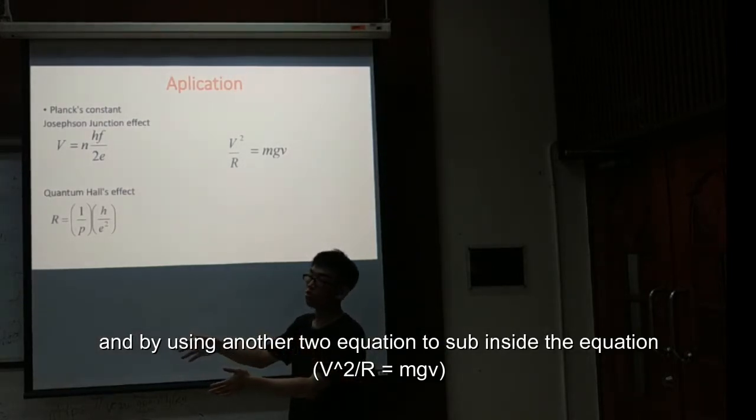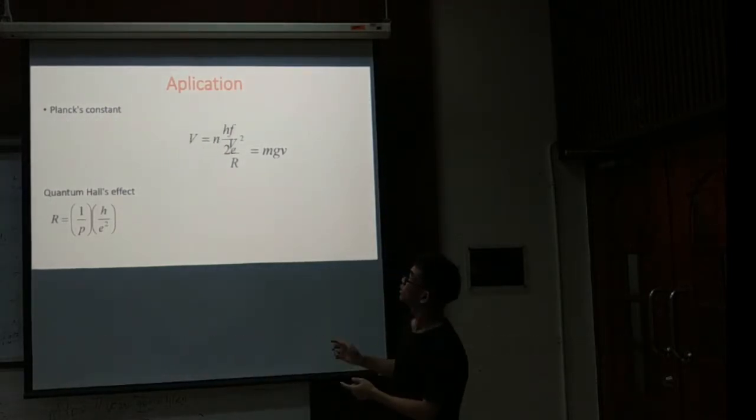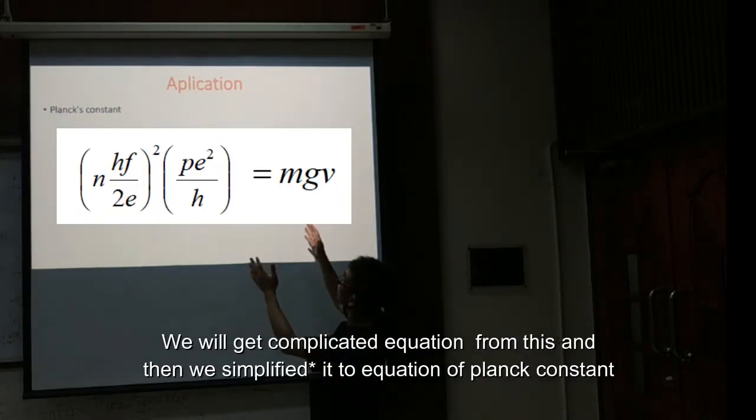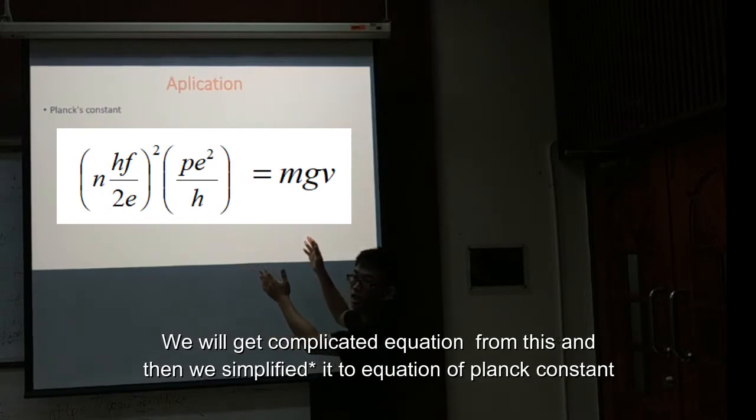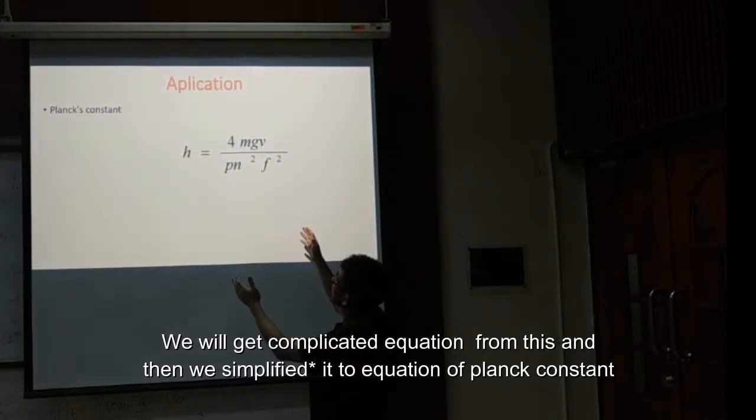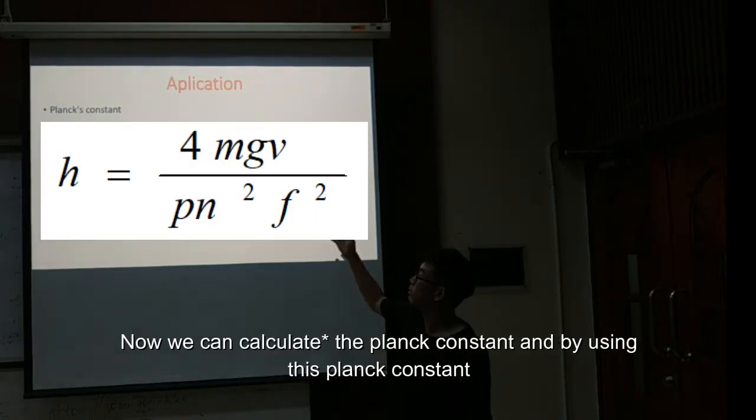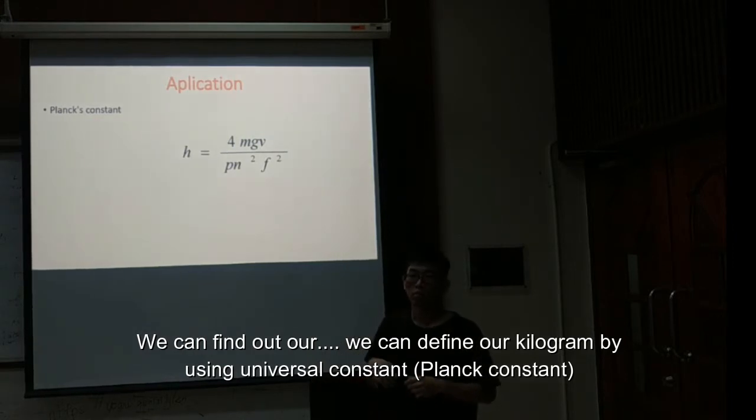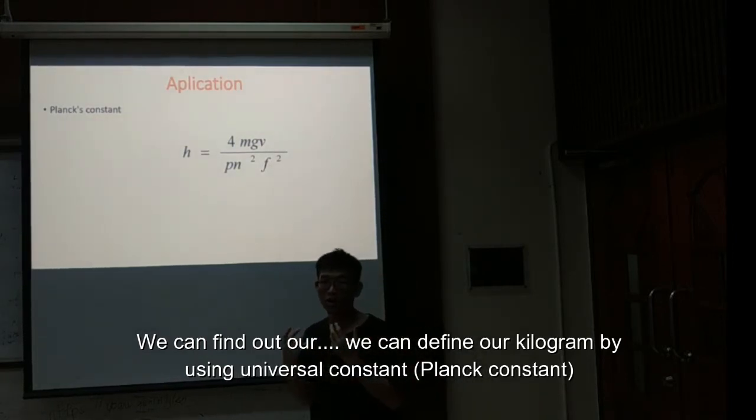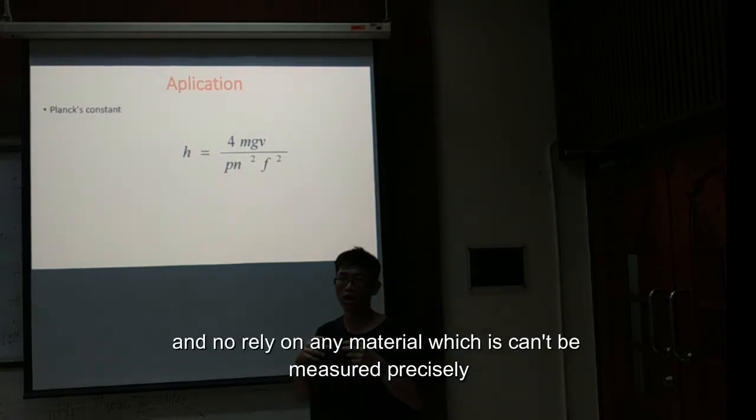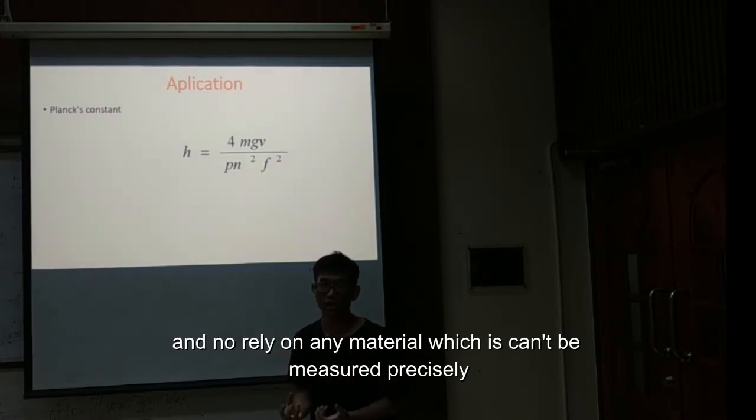By using the other two equations to substitute inside the equation, we will get a complicated equation. Then we can make it become the equation of Planck's constant. Now we can get Planck's constant. By using this Planck's constant, we can quantify our kilogram using the universal constant and not rely on any material.